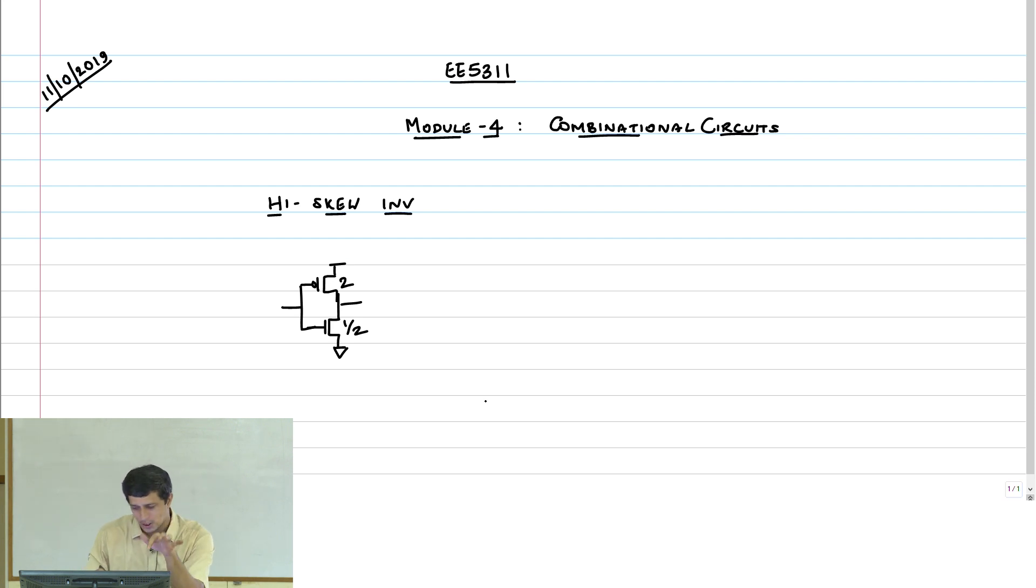What I will do is now I will show you that whether I take 2.5 or whether I take 1 and 4, you will get the same answer. So now this is my high skew inverter, let's say. I want to now calculate the pull-up logical effort and this is my pull-down logical effort.